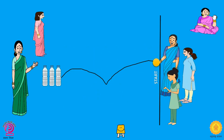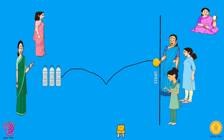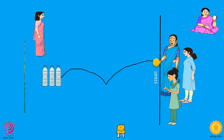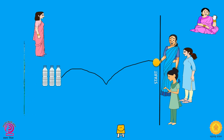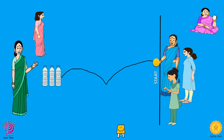All the mothers should stand in a line. Keep three bottles half full of water at a distance of 10 feet in front of you. Keep a three to four centimeter distance between all three bottles. Let each mother stand on the line and knock down as many bottles as possible at a time with a cloth ball.